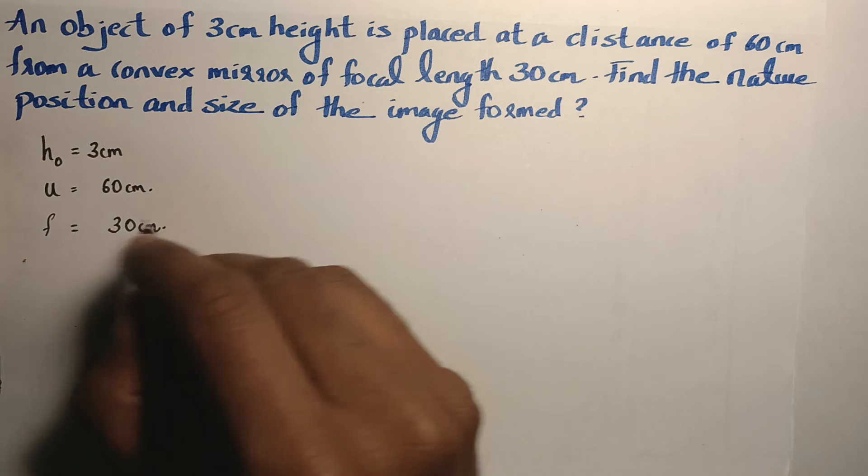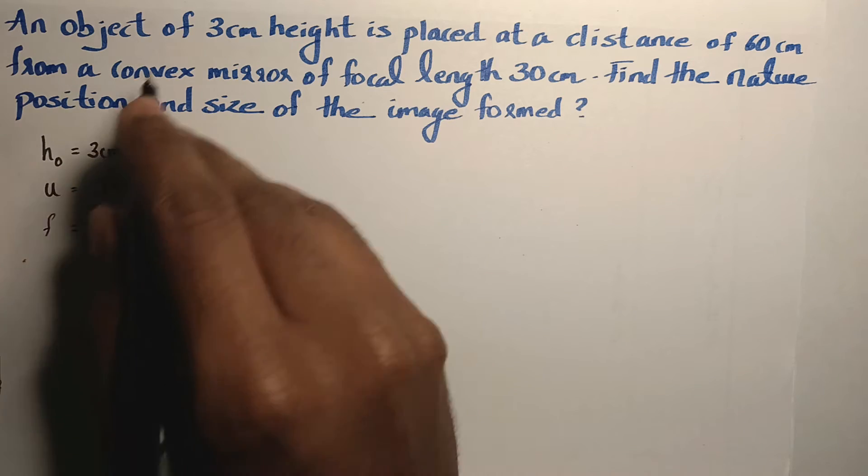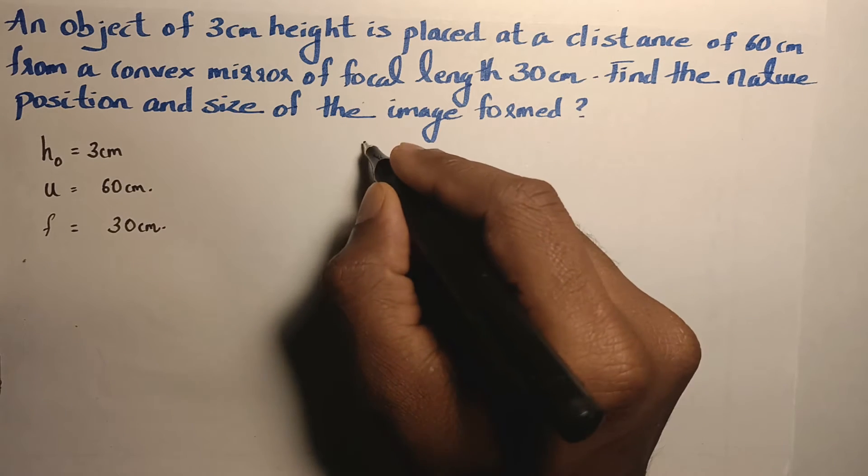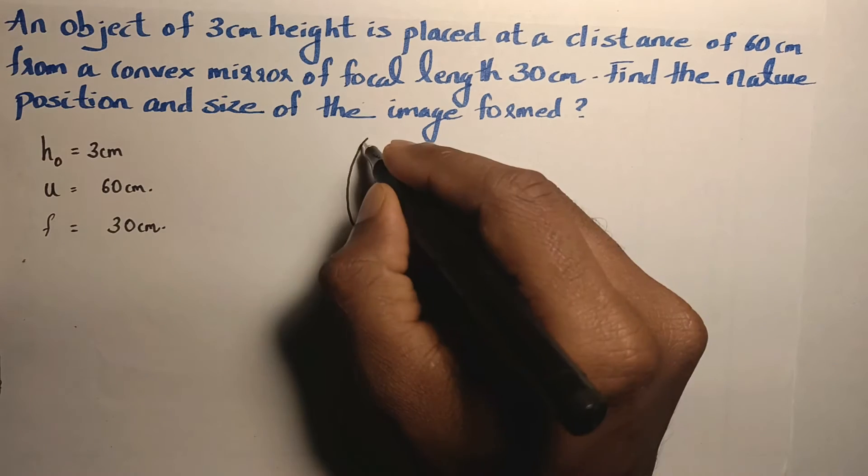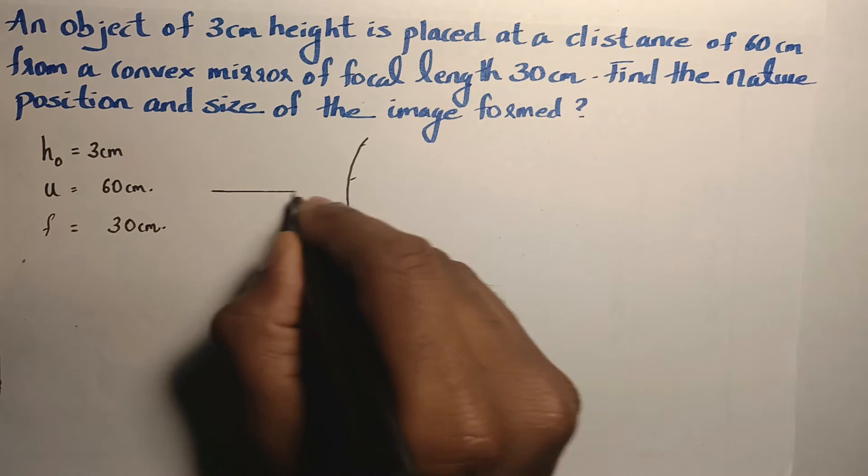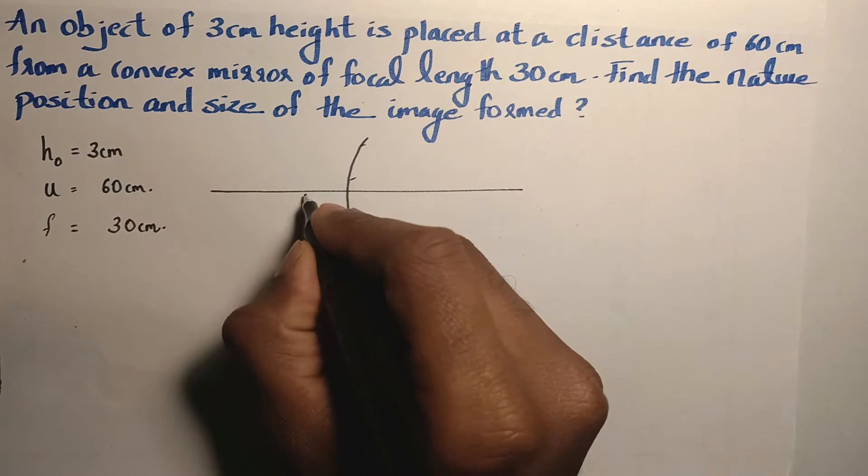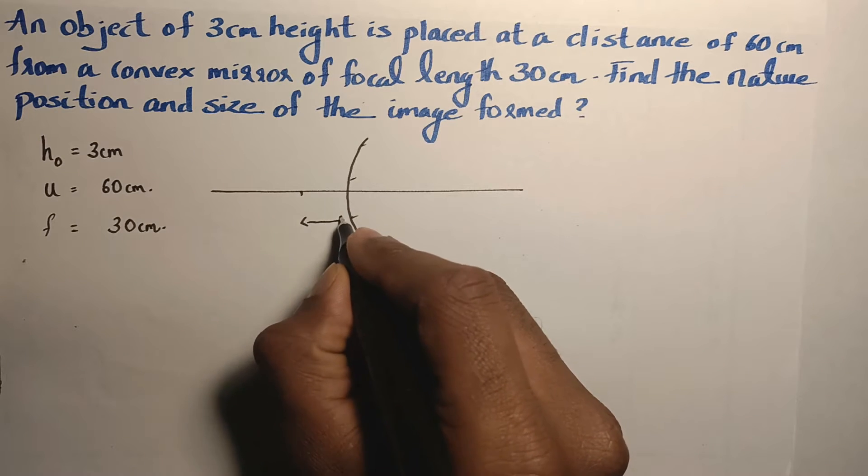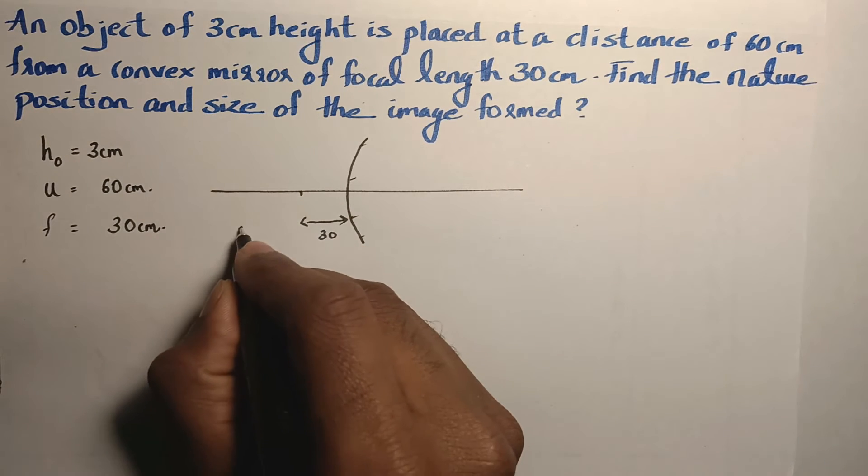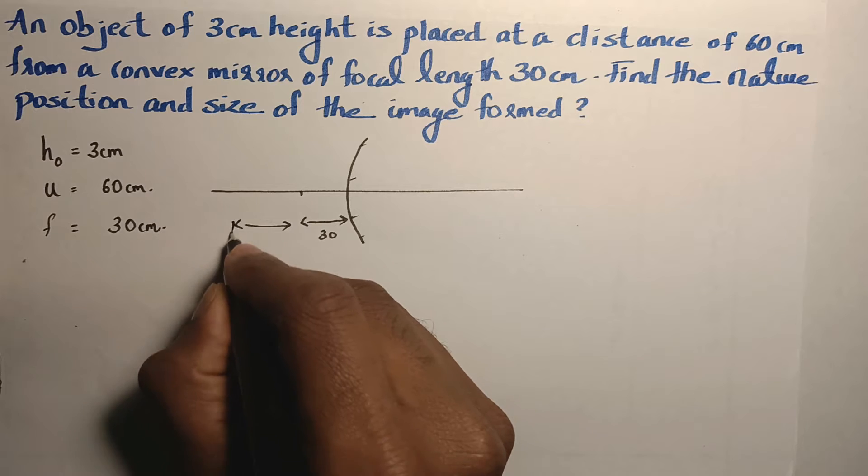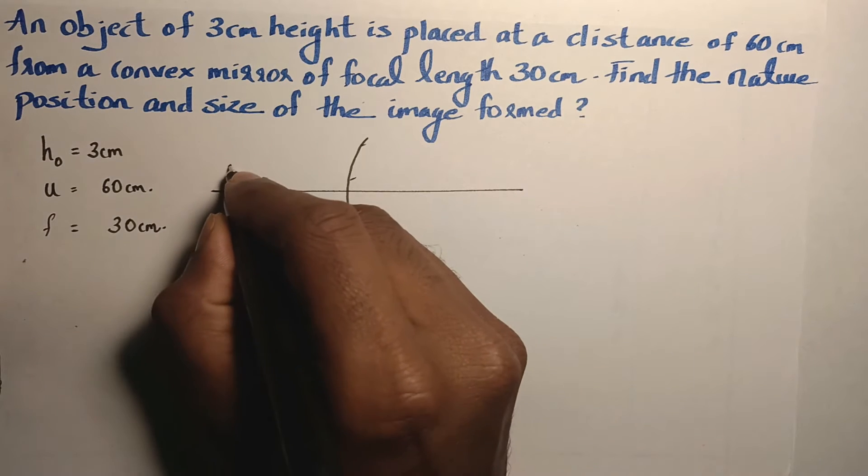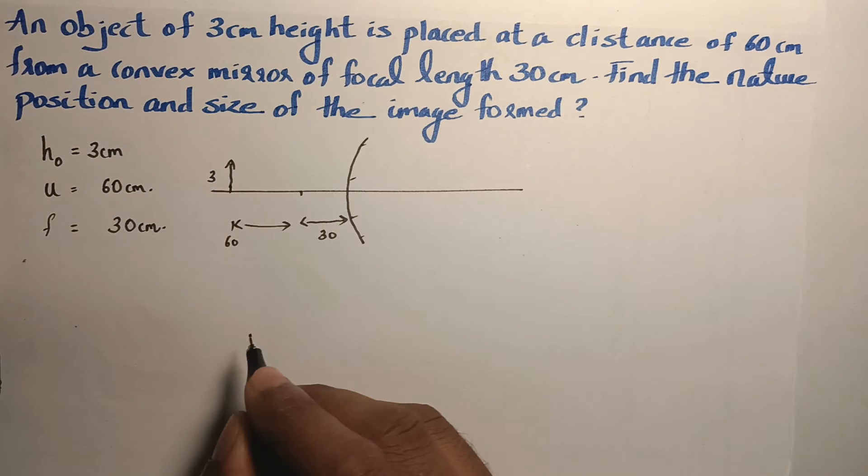Let us first understand the arrangement of the given parameters in this question. We have given a convex mirror having focal length of 30 centimeter. This is 30 and 30 plus 30 and this is 60. And at 60, an object of 3 centimeter height is placed.